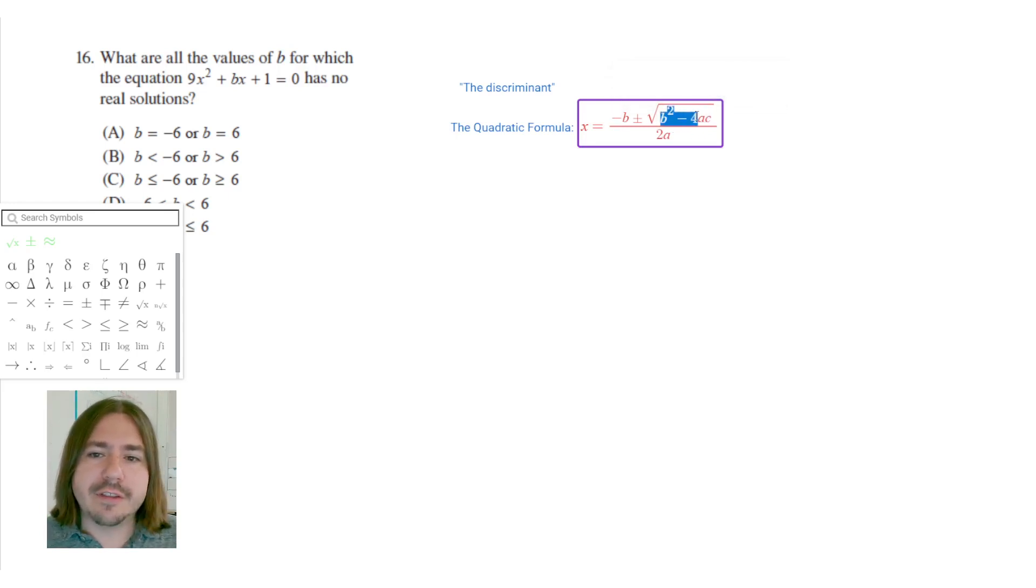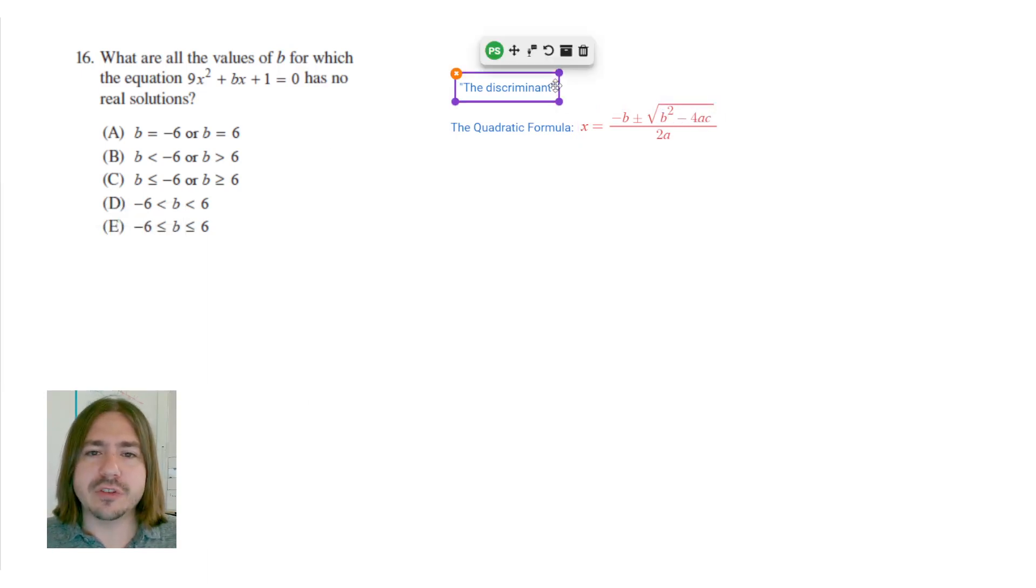Now lastly, if this number ends up for some reason being negative, then you are trying to take the square root of a negative number, which is not a real number. So that's kind of the key here, is that this number underneath the square root is controlling how many real solutions you have. And so that is what the discriminant is.